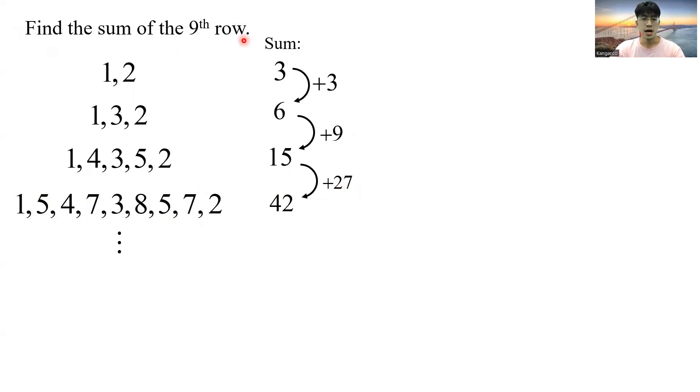Now, how do you find the sum of the 9th row? So we simply take the starting value 3 plus 3 plus 9, sorry, plus 3, plus 3 to the power of 2, plus 3 to the power of 3. And it goes on, on and on, until you get 3 plus 3, plus 3 to the power of 2, until 3 to the power of 8. And that's the 9th row, the sum of the 9th row.